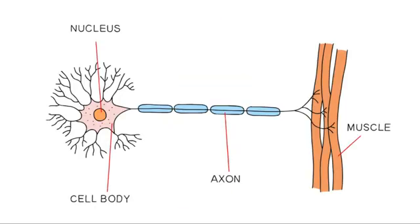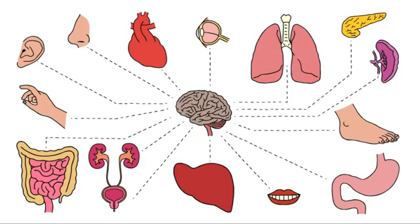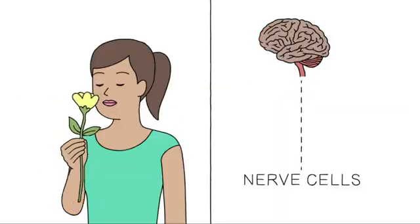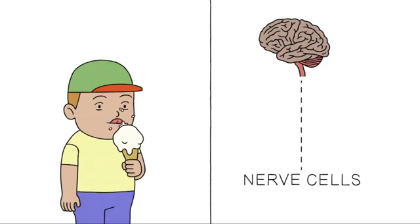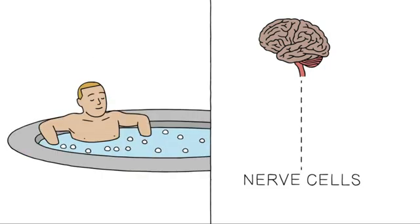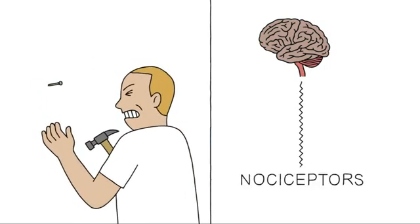Just like all nerve cells, they conduct electrical signals sending information from wherever they're located back to your brain. But unlike other nerve cells, nociceptors only fire if something happens that could cause or is causing damage.